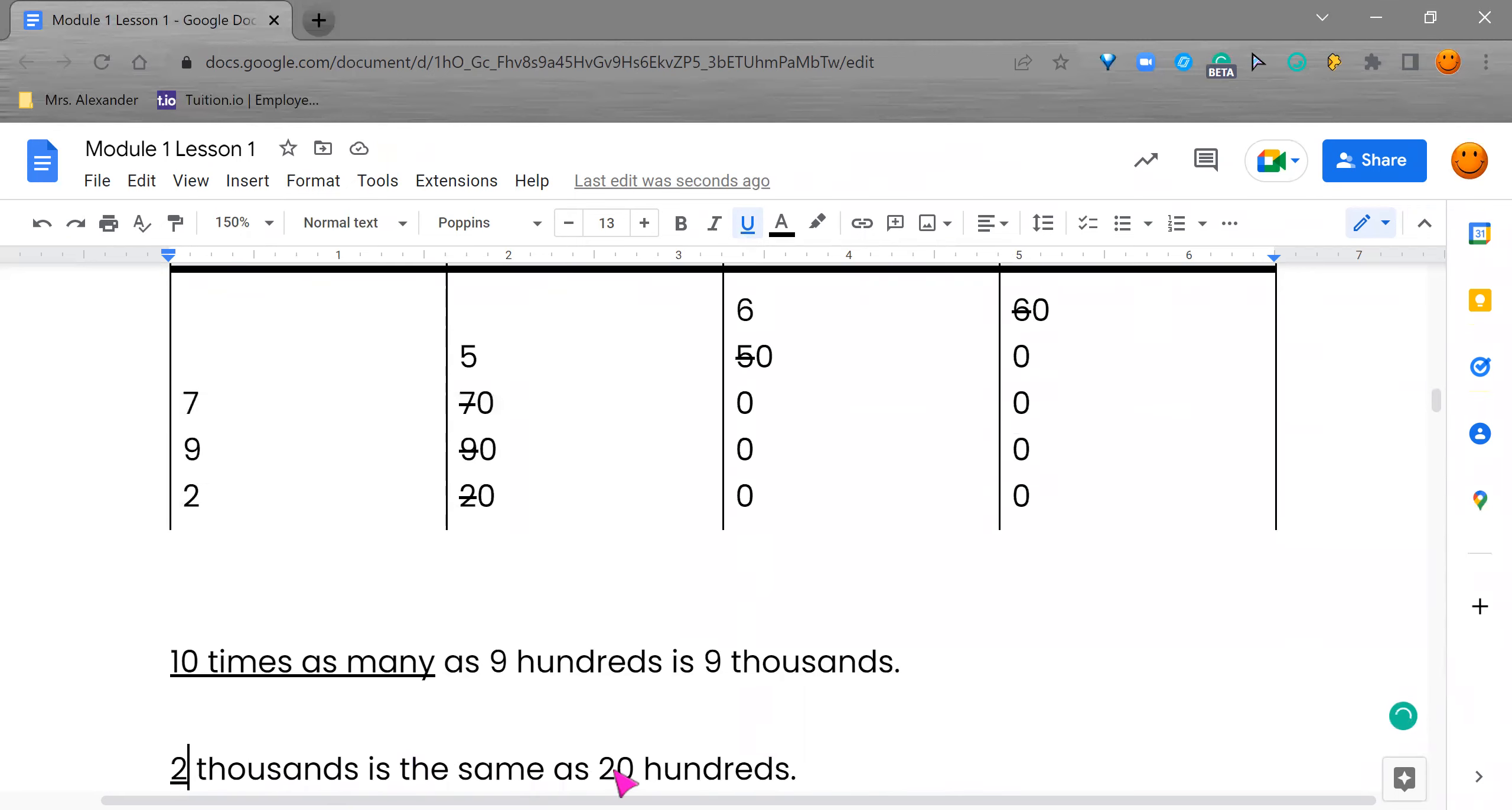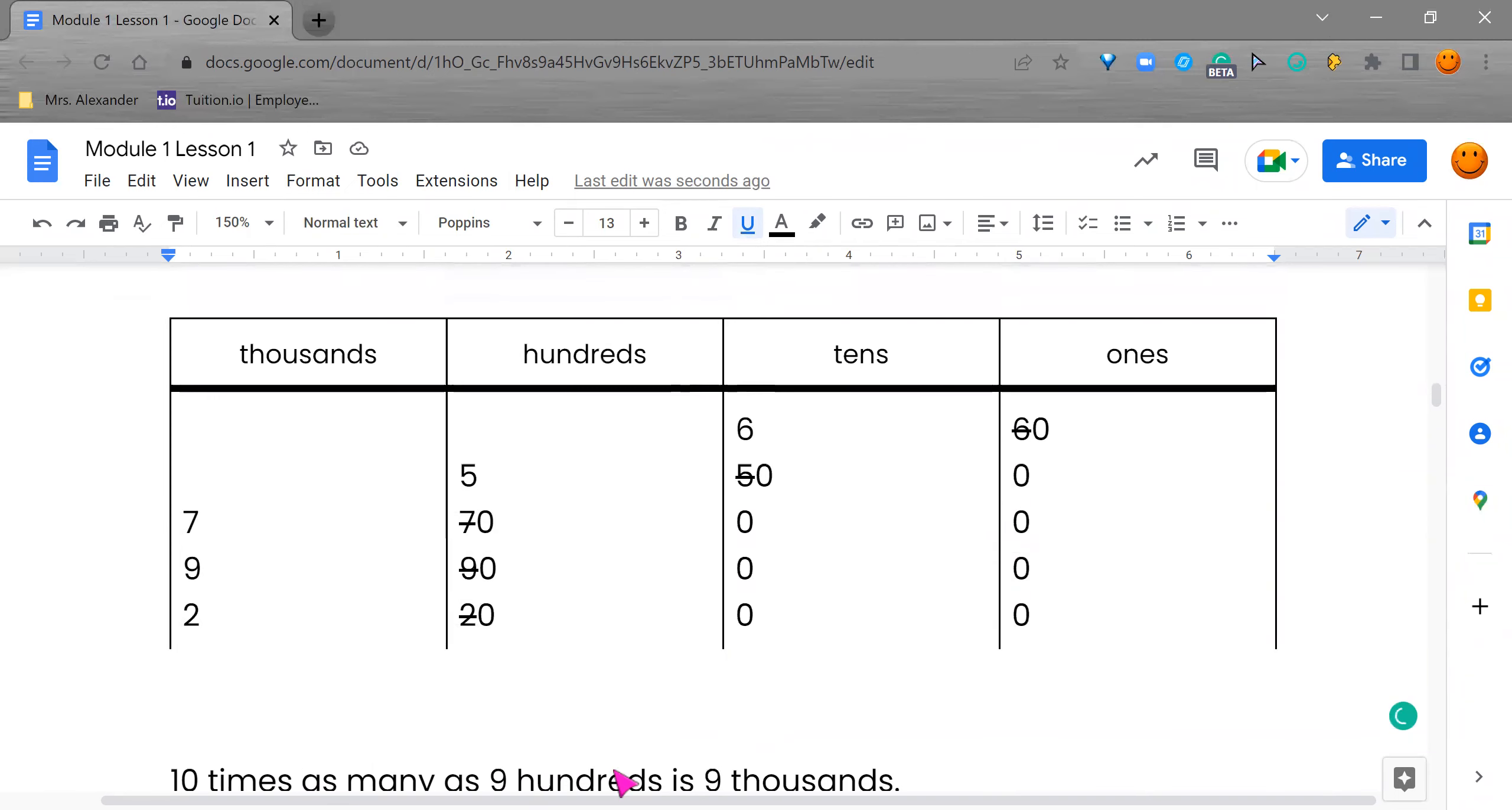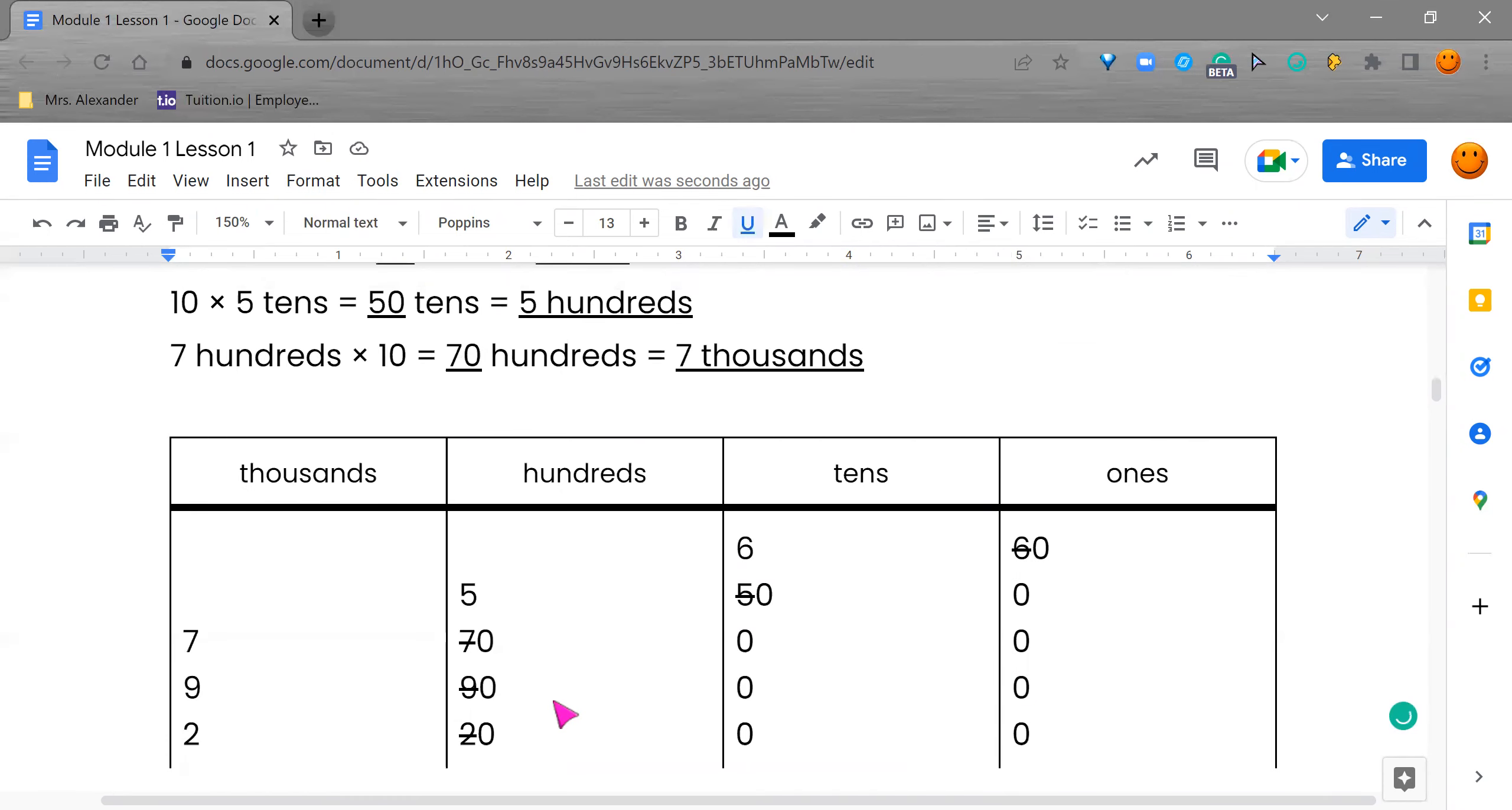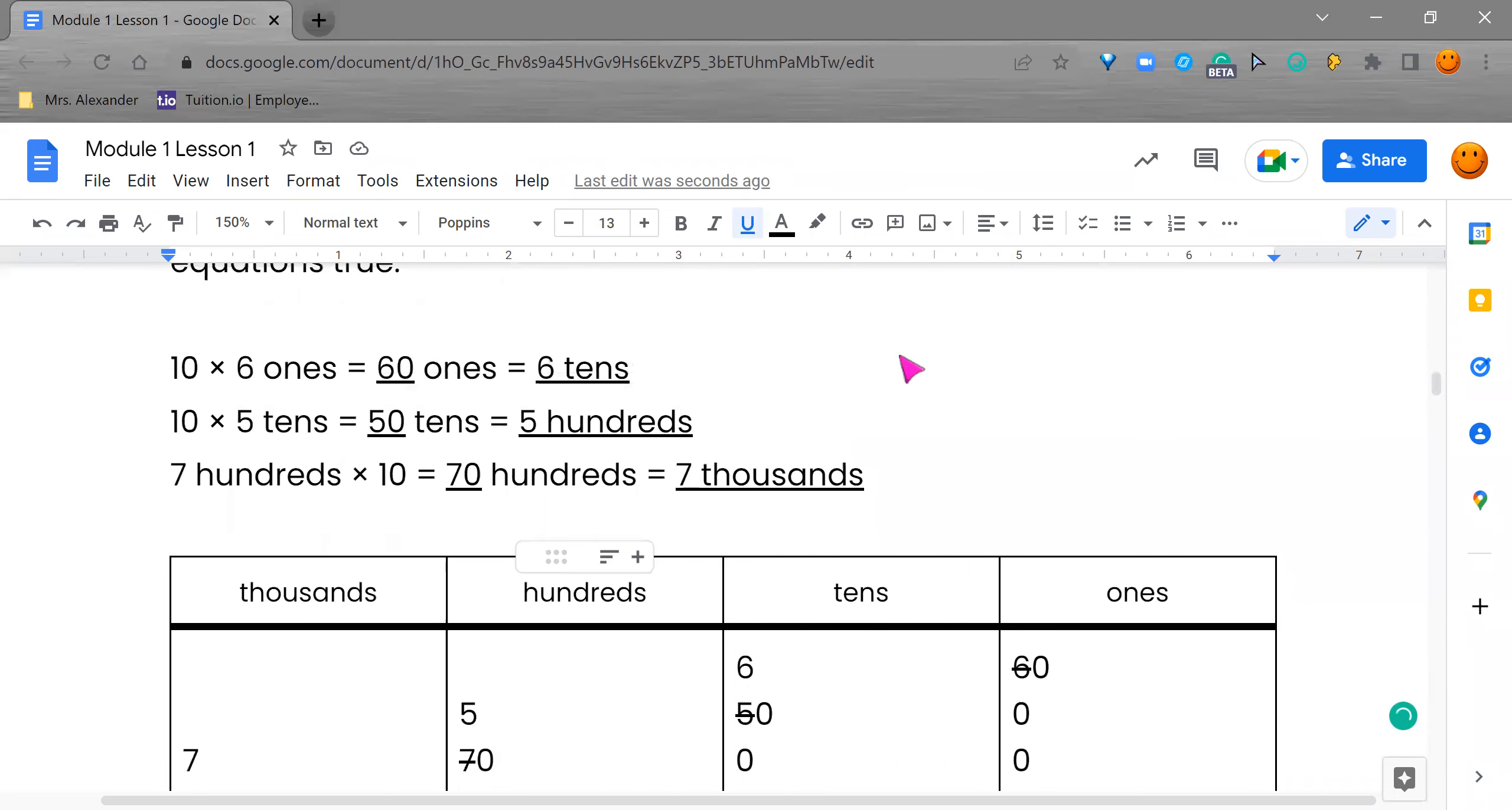This is our first worksheet. Remember, it's Engage New York Module 1 Lesson 1. If you enjoyed this video, please subscribe. Please click the bells for the notifications. And if you enjoyed it, give me a thumbs up. Remember, as you're doing this to take your time, remember to smile, giggle and wiggle. And I'll talk to you later. Bye.